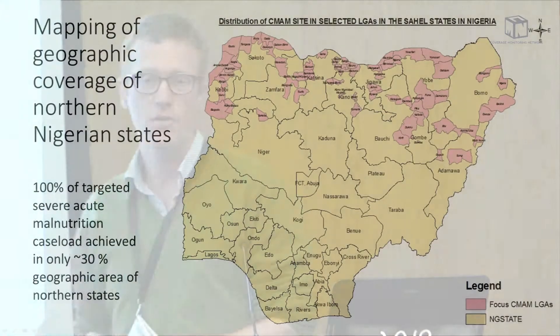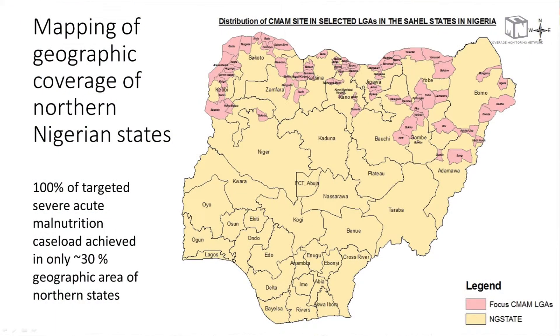This is a map of the geographic coverage of the management of severe acute malnutrition program in northern Nigerian states. The pink areas represent local government areas where we have a management of severe acute malnutrition program in operation. These were chosen based on the prevalence and the population density of those LGAs. In 2012, the program reported to have met 100 percent of their targeted caseload in the northern states with only 30 percent of geographical coverage.